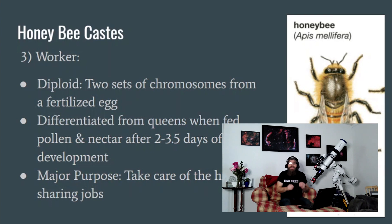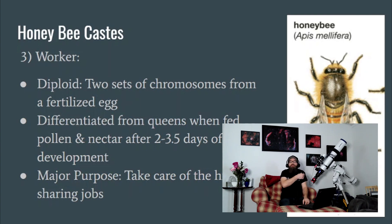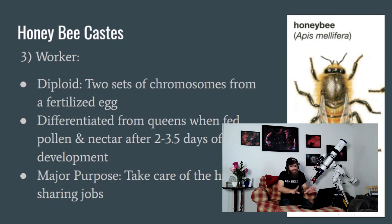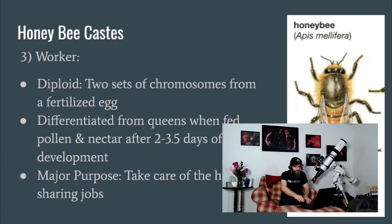Worker bees are diploid — they have genetic information from both their mother and their father — and they are differentiated from queens when fed a different diet after the first couple of days: nectar and bee bread. Their major purpose is literally everything that isn't laying brood or mating with a queen. Every other job is done by worker bees, and they have divided jobs based on age.